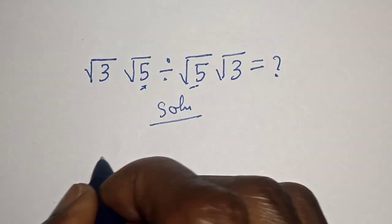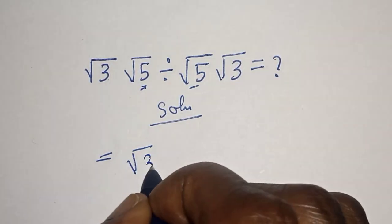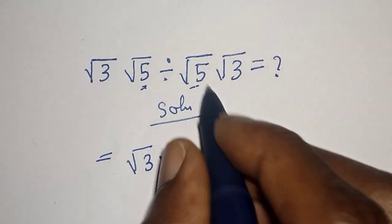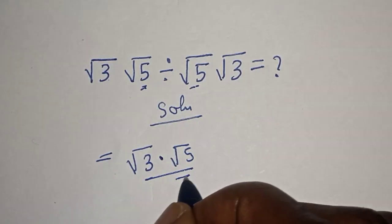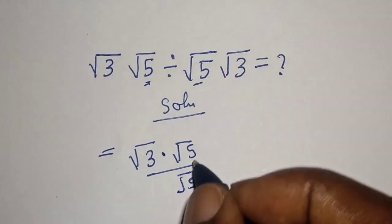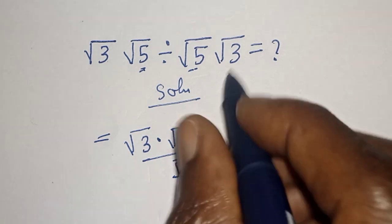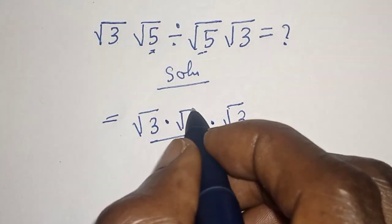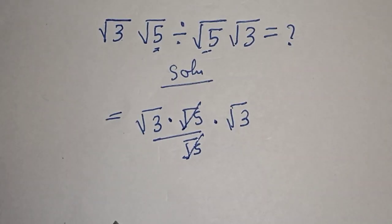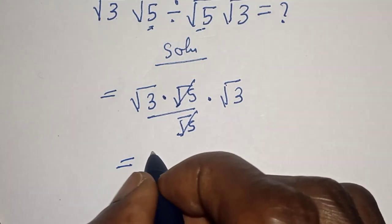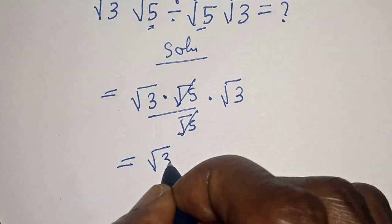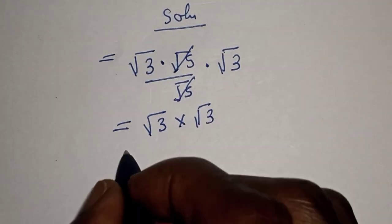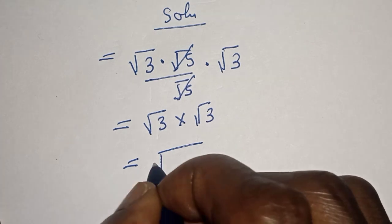This is equal to square root of 3 multiplied by square root of 5, then divided by square root of 5 multiplied by square root of 3. Square root of 5 and square root of 5 cancel out. This is equal to square root of 3 multiplied by square root of 3.